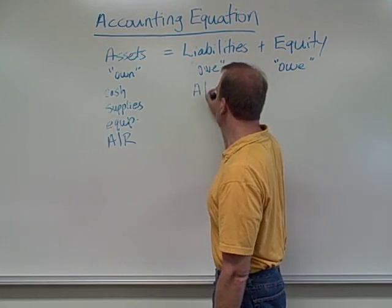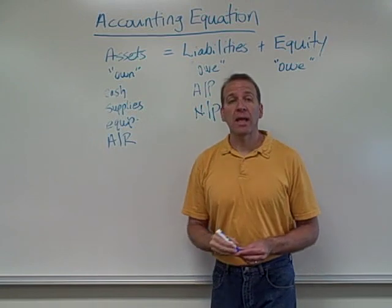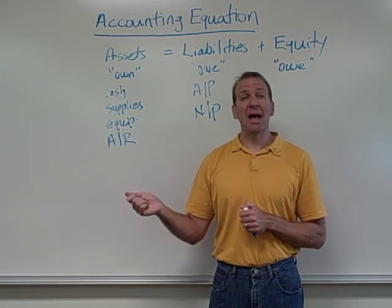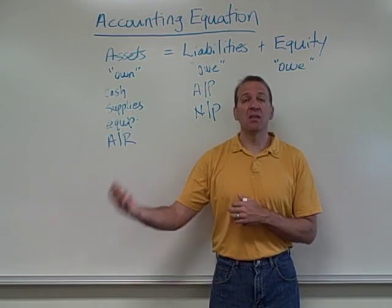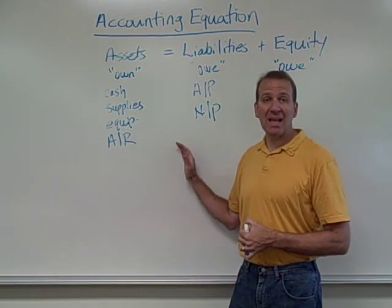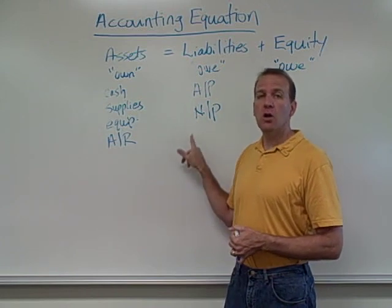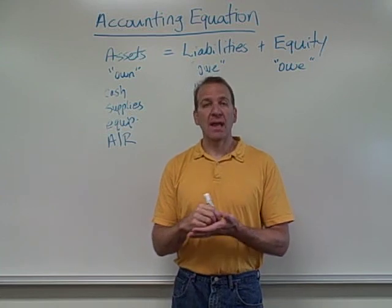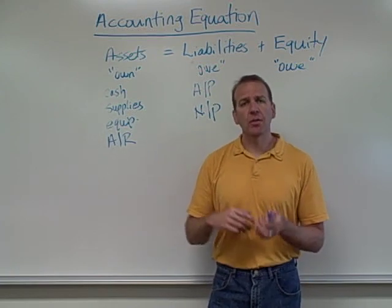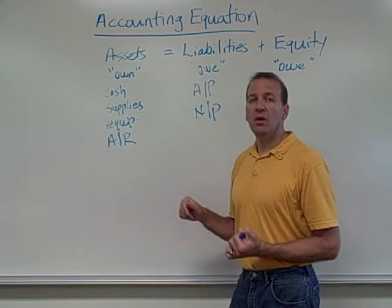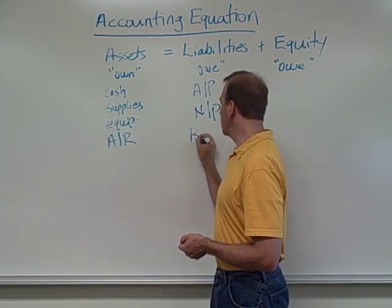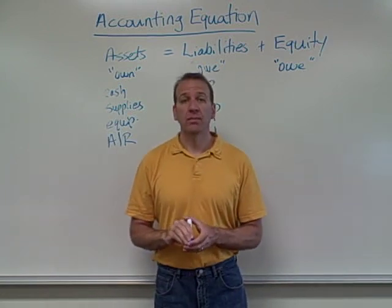Common liabilities include accounts payable and notes payable. Accounts payable is the opposite of accounts receivable — it's when we buy something from another business but don't pay cash yet; we're doing it on account and will pay later. That's a liability because we owe money to somebody else. A note payable is when we sign an actual note with a bank or financial institution — a legal document stating how much we pay back, over what time period, and the interest rate. Loan payables are similar. Another common liability we'll discuss later is bonds payable, which is a different type of borrowing arrangement.